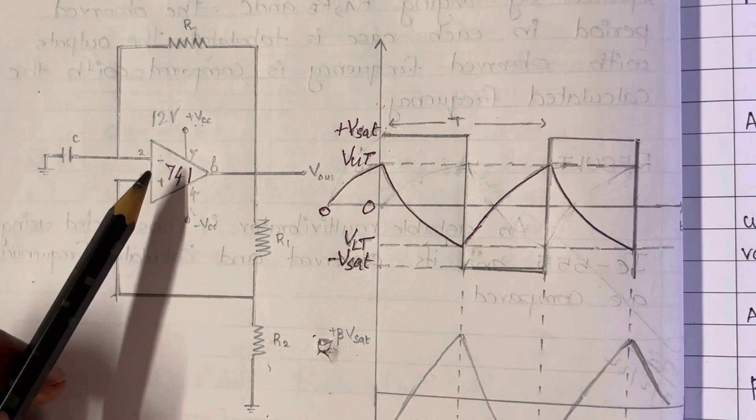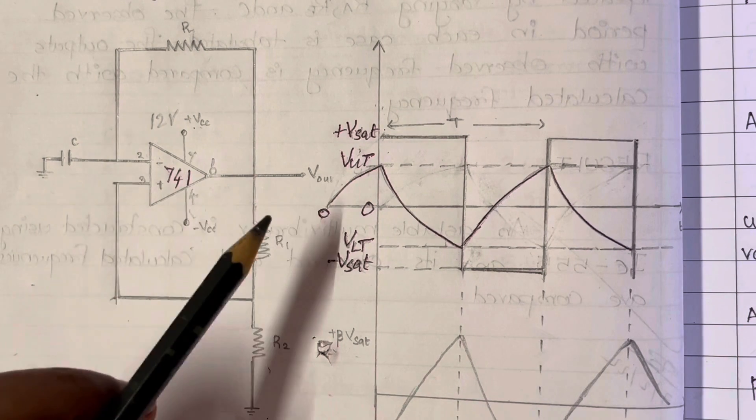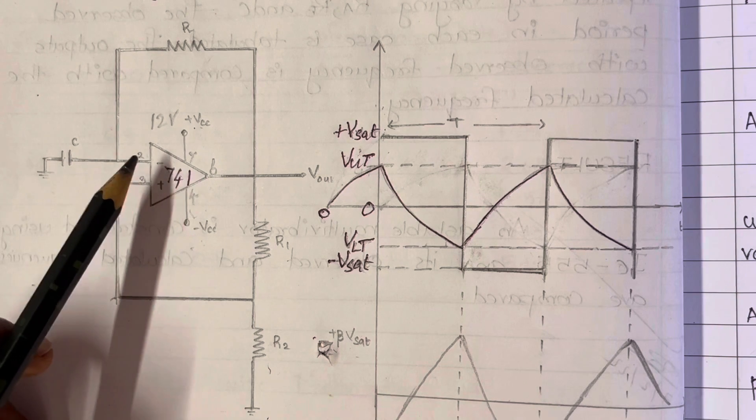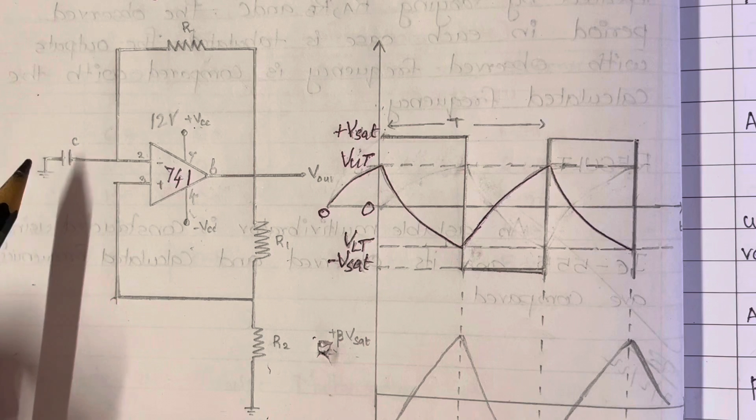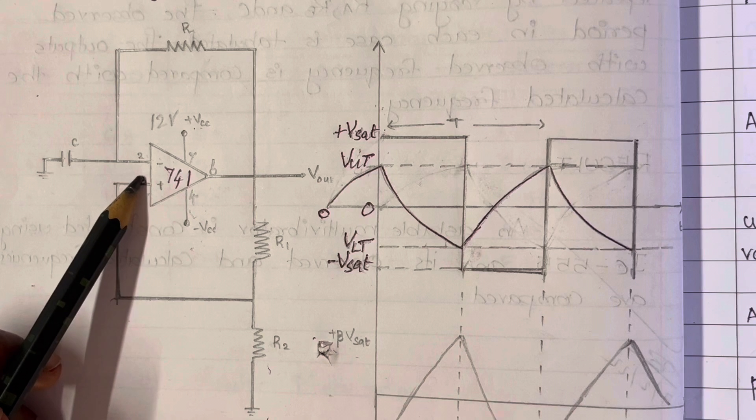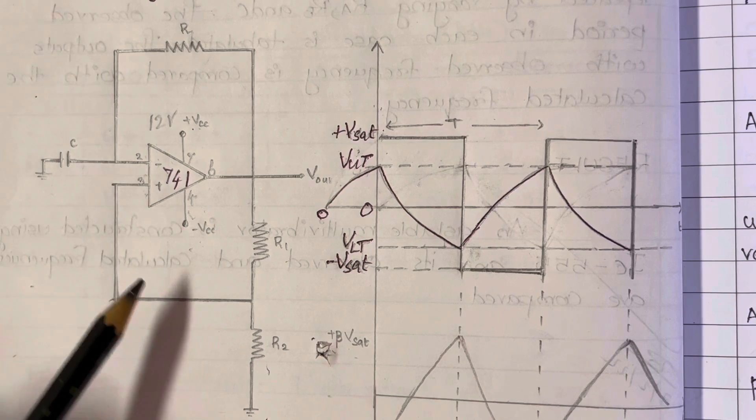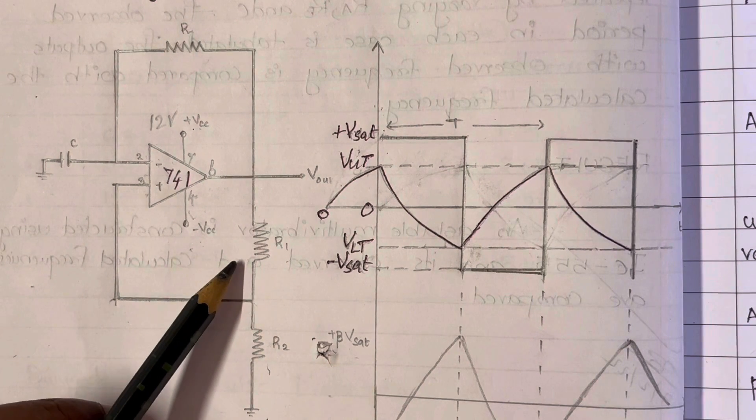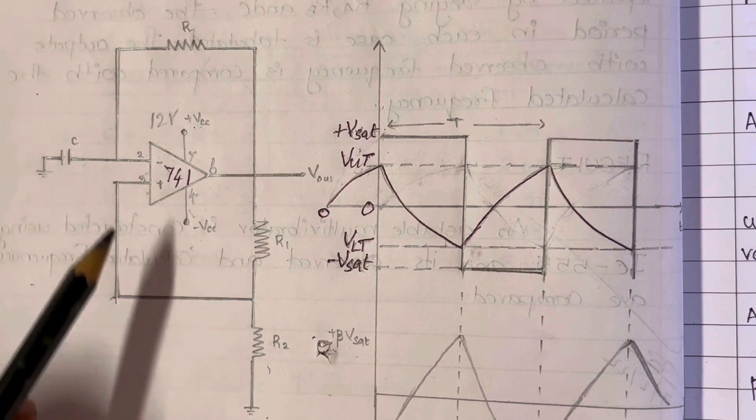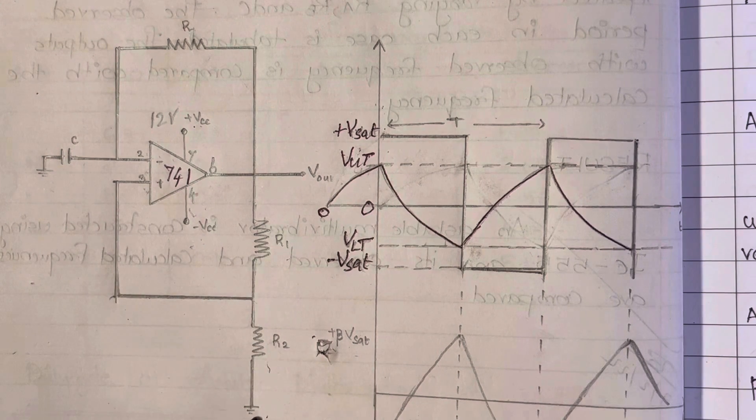Coming to the non-inverting terminal, we have the feedback resistance R connecting across the output pin 6 and pin 2 inverting terminal. And from there itself there is a capacitor, the other end of which is grounded. From non-inverting terminal 3 we have a junction to which there are two feedback resistors R1 and R2. The junction of R1 and R2 is connected to the non-inverting terminal 3 and the other end of R2 is grounded.